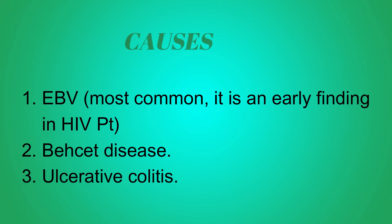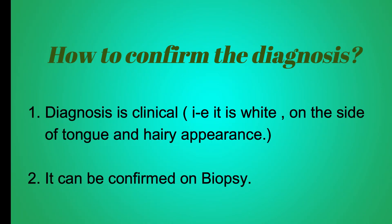So you can diagnose an HIV patient just by identifying the type of patch in his mouth. Other than this, it can be associated with Behçet's disease and can be present in a patient with ulcerative colitis. The diagnosis for hairy leukoplakia is completely clinical — a white patch will be present on the side of the tongue and it will have a hairy appearance or irregular margins.